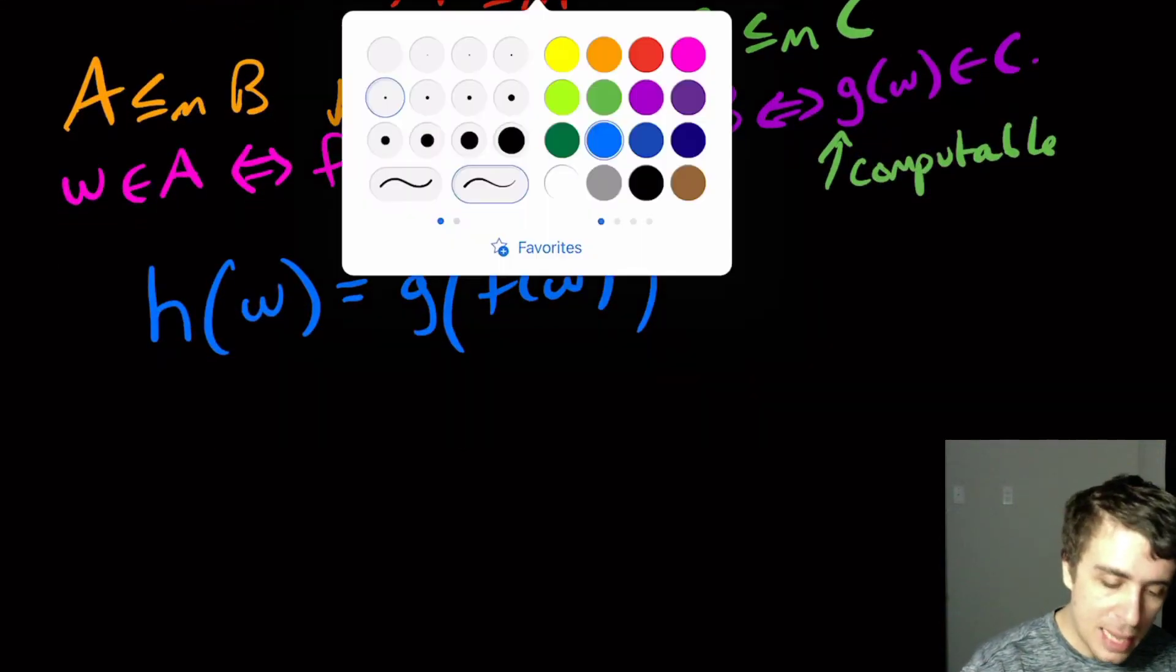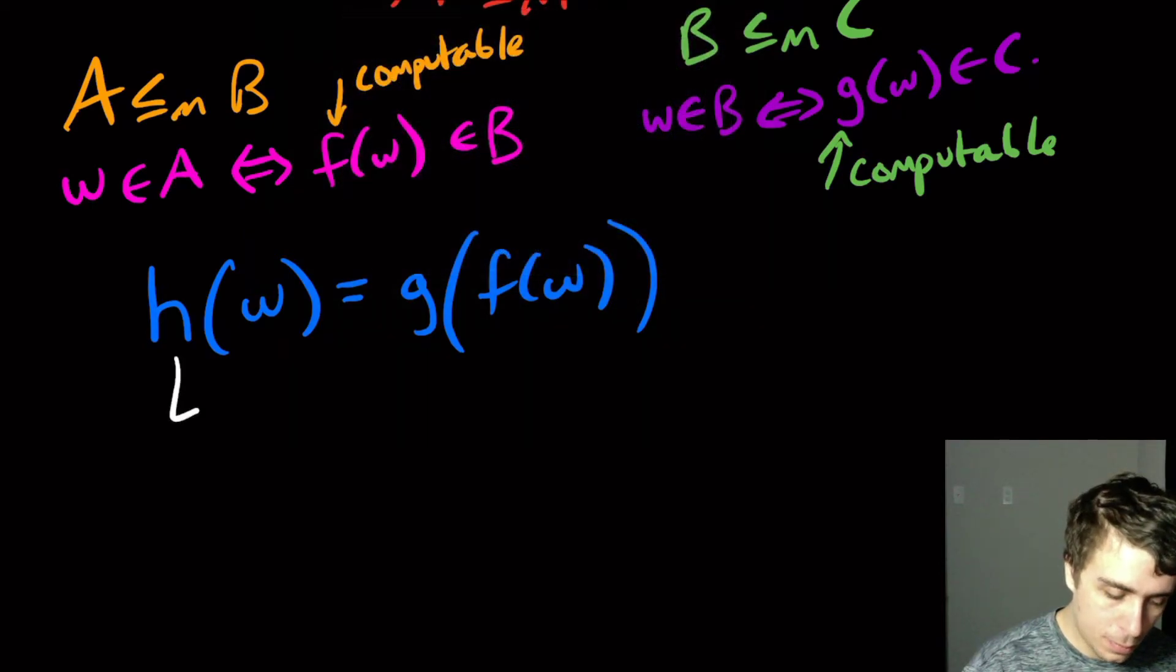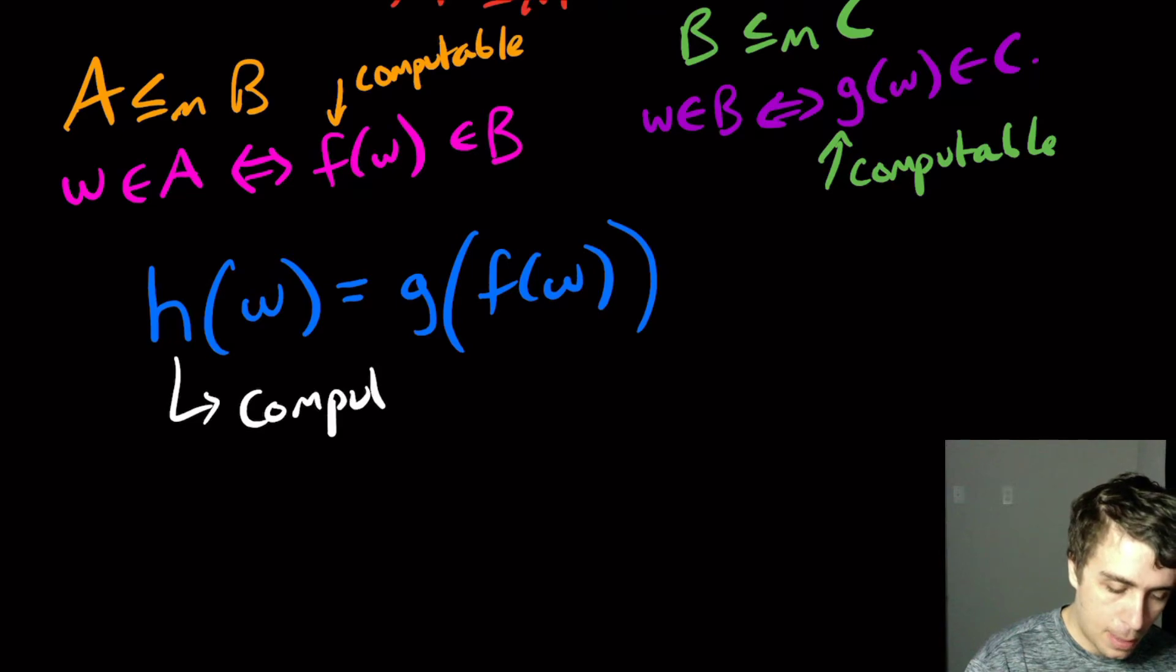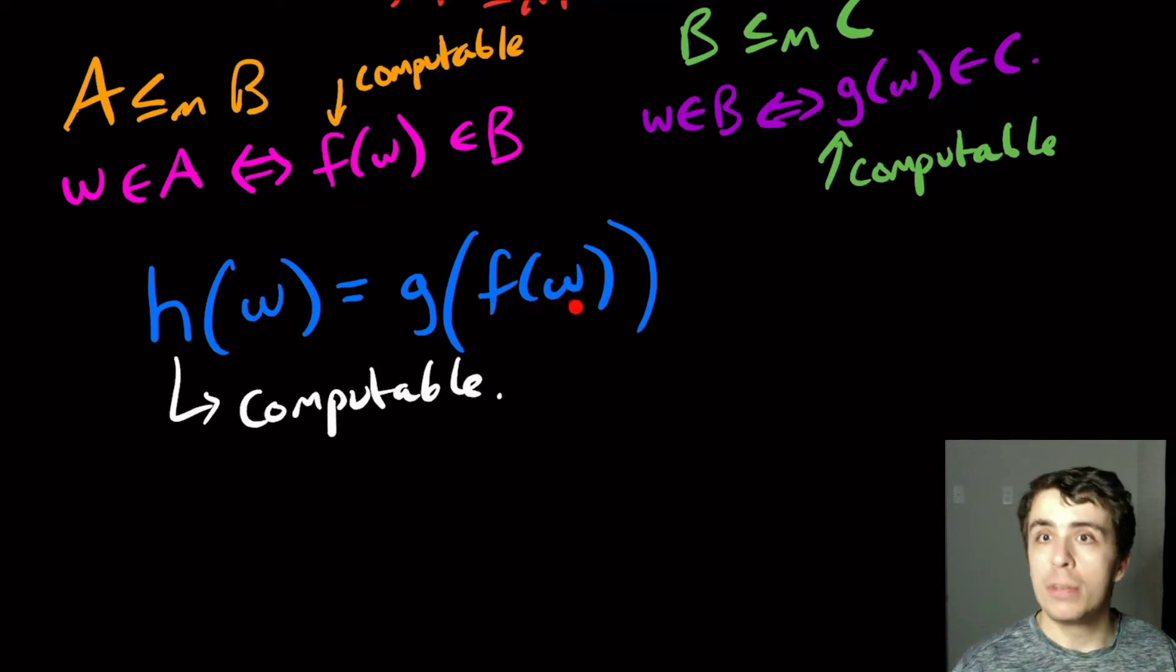And I claim that H is computable too. So this thing I claim to be computable. And the reason is that F of W is computable, so I can just write F of W onto the tape,